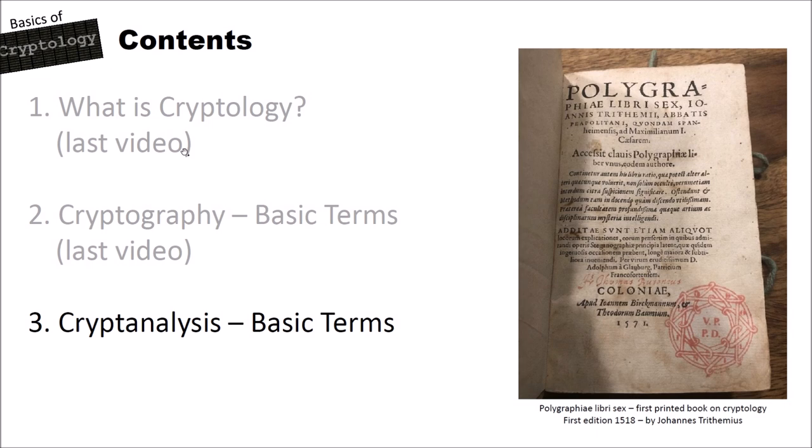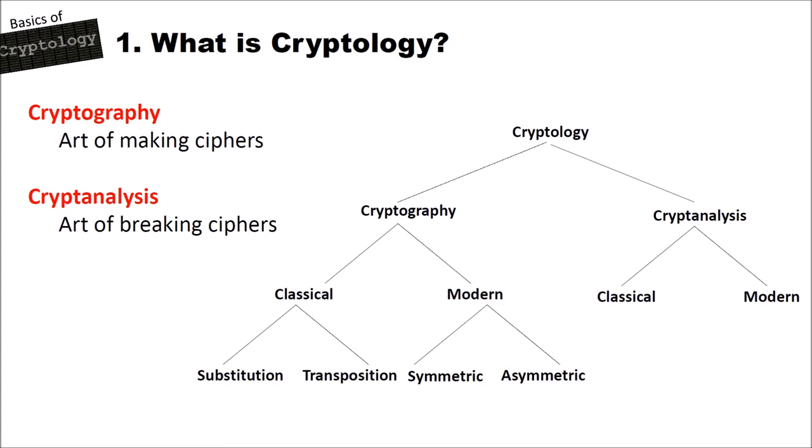As you probably remember from the last video, cryptography is the art of making ciphers, and cryptanalysis is the art of breaking ciphers. In the last video we had a look at the left side of the tree — cryptology, cryptography, classical and modern cryptography, and substitution and transposition ciphers. In this video, we want to have a look at cryptanalysis and classical cryptanalysis.